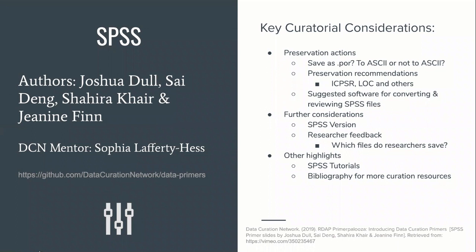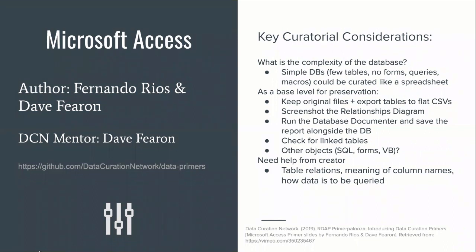These are examples from the first workshop. We ask them to identify software used and key curatorial considerations and preservation actions, and then it highlights useful information like tutorials and bibliographies. Microsoft Access is one we've actually seen being used in the community. We all get a lot of proprietary file formats in our repositories, so mechanisms to evaluate what you need to do to make those reusable long term is really helpful.